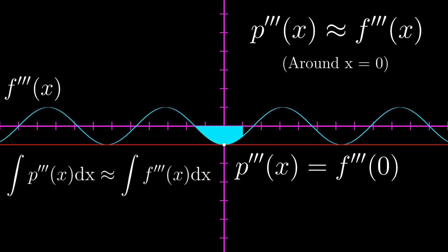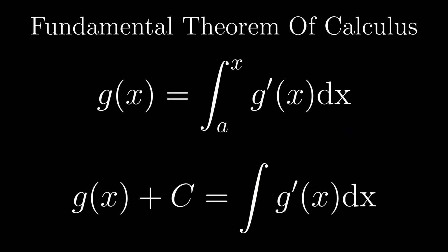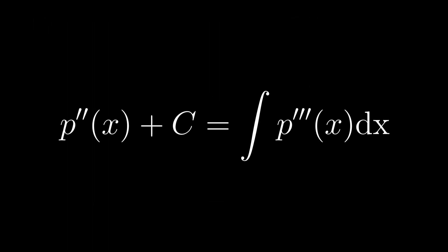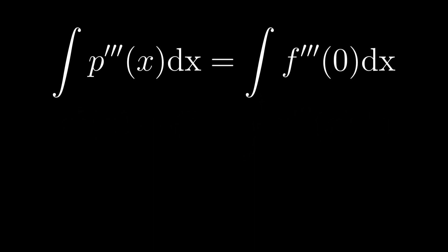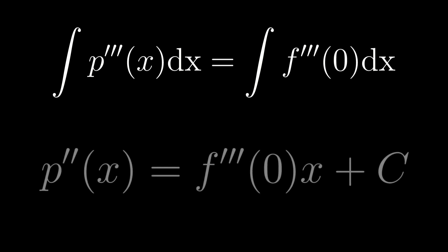This means that the area under their graph, or their integral, around this point will also be equivalent. The green colored region represents their overlapping area, and it gets more accurate to their actual areas as x approaches 0. From the fundamental theorem of calculus, we know that integrals are basically inverses of derivatives. Thus, the integral of the third derivative of p is the second derivative of p plus c. So integrating the expression gives: the second derivative of p equals the third derivative of f at 0 times x plus c, where c is some constant.